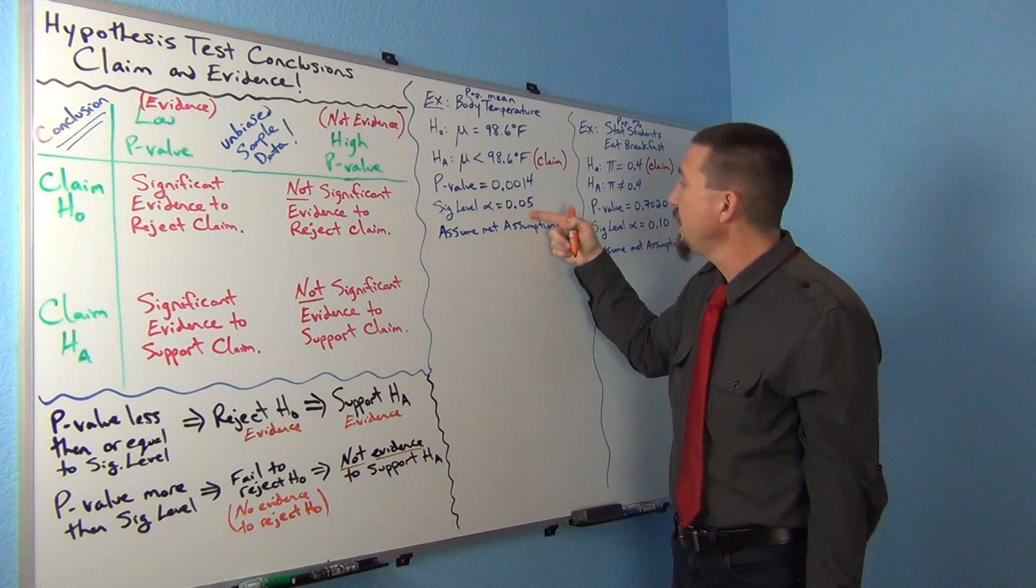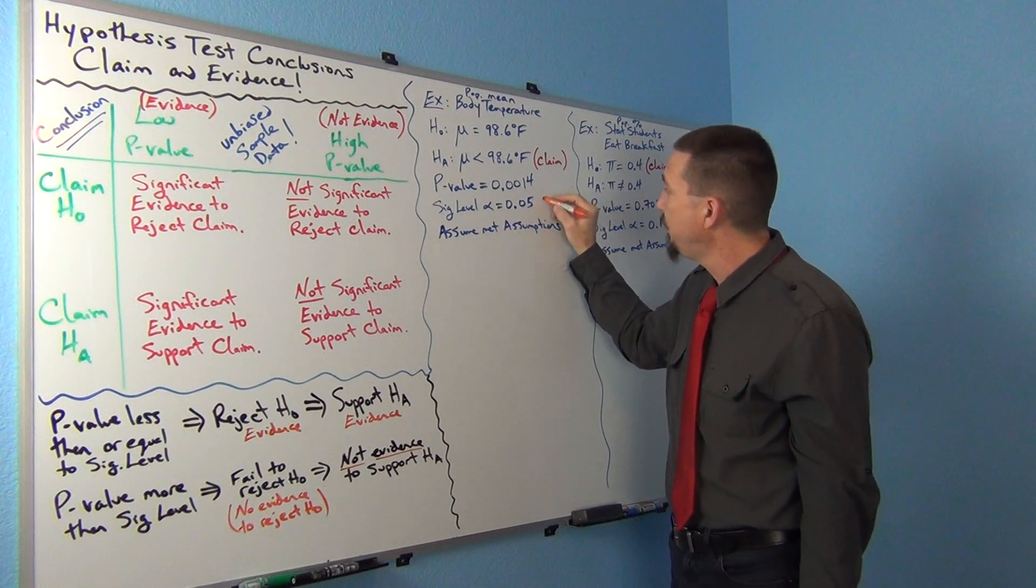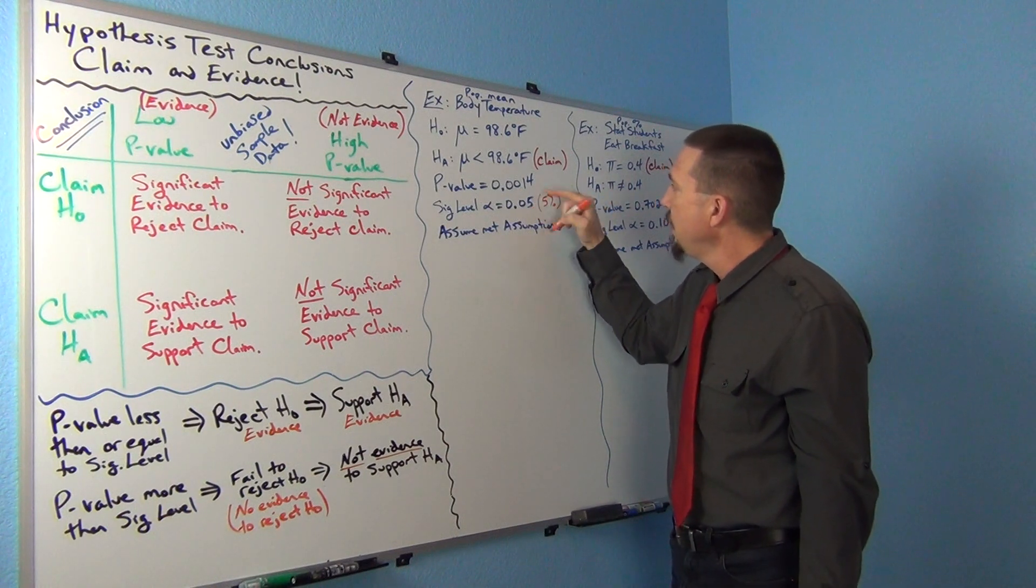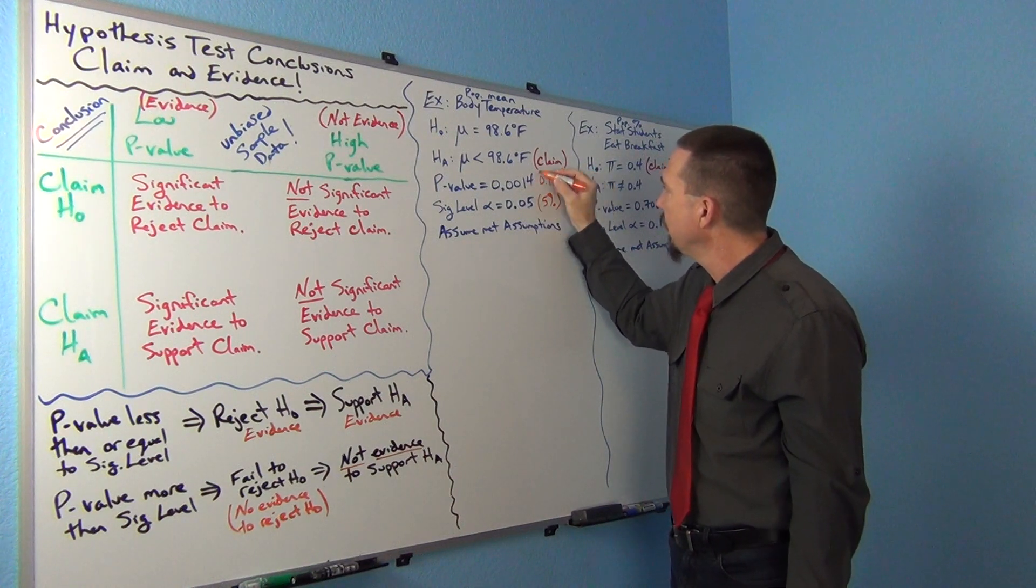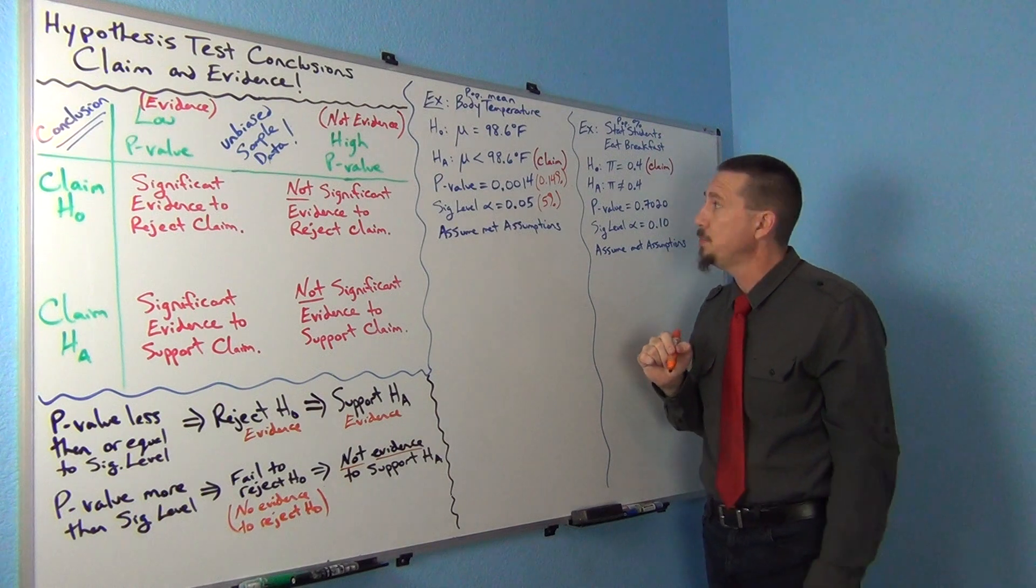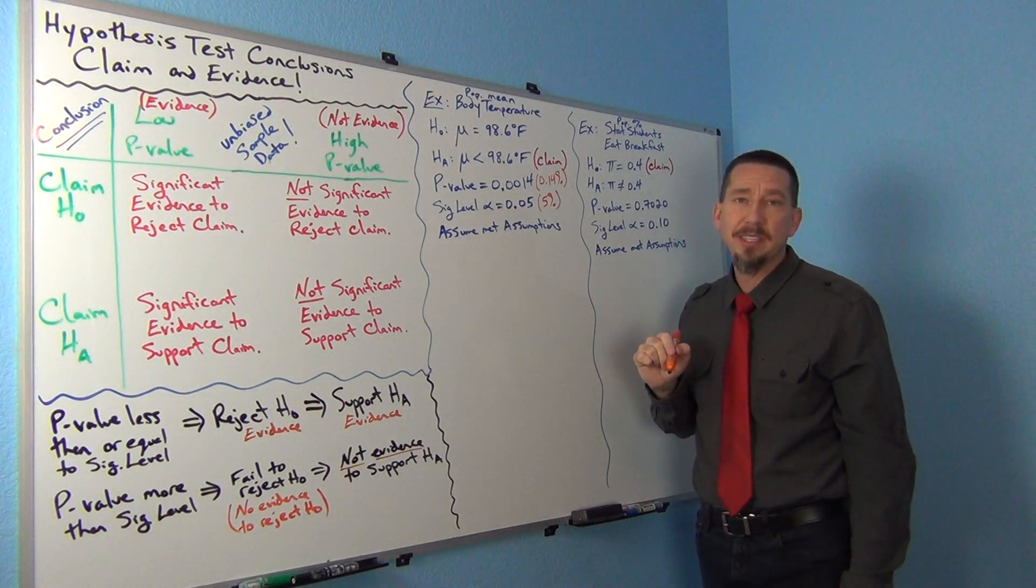Again, if you convert these to percentages, 0.05 would be 5%. 0.0014 would be 0.14%, right? That's way lower than even 1%. It's 1.4 hundredths of a percent.